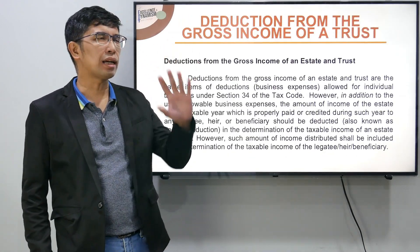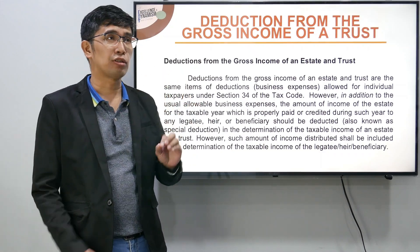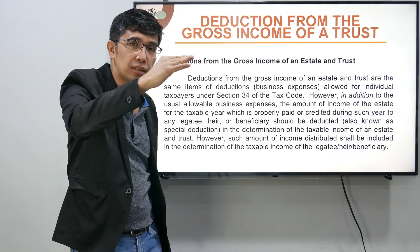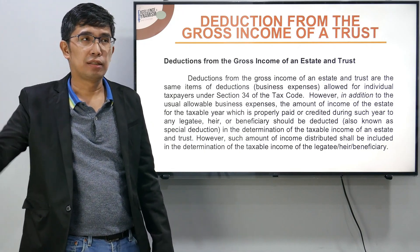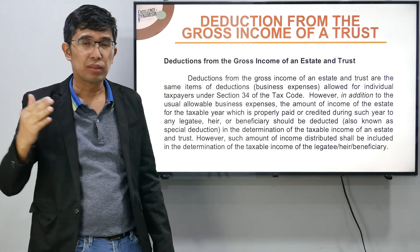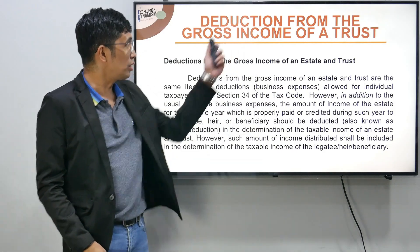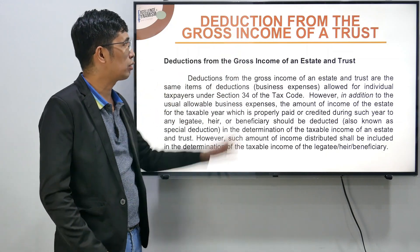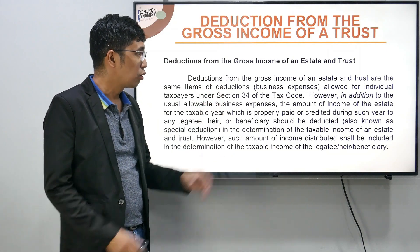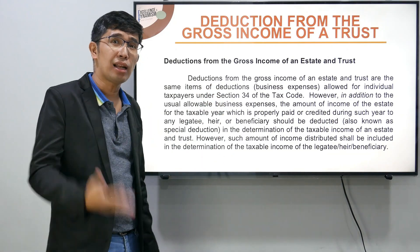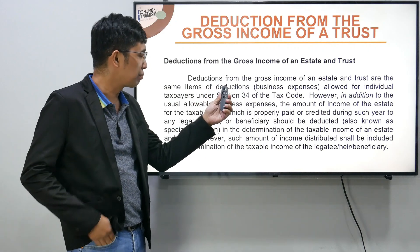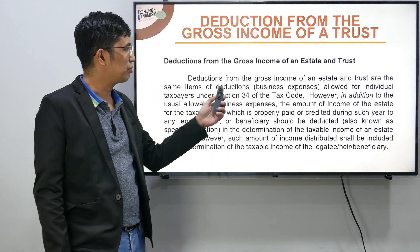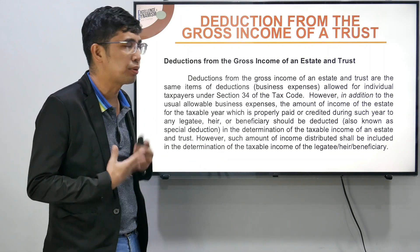How do we arrive at taxable income? Start ka sa sales or revenue, deduct yung cost of sales or cost of direct services, then i-deduct yung operating expenses to arrive at taxable income. Ganito din dito. What are the allowable deductions from the gross income of a trust? Ang sagot: kung ano-ano din ang deductions na allowed doon sa isang individual taxpayer. Deductions from the gross income of an estate and trust are the same items of deductions allowed for individual taxpayers under Section 34 ng tax code.